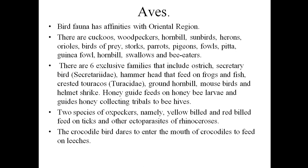In addition to these generalized birds, there are six exclusive endemic families, which include ostriches, the secretary bird, the hammerhead (which mainly feeds on frogs and fish), crested turacos, ground hornbills, mousebirds, helmet shrikes, and even the honey guide, which feeds on honey bee larvae. The honey guide is so named because in the African region, tribes follow this bird because it visits beehives to eat the larvae — so if you want to locate a honey bee hive, better to follow the honey guide bird.